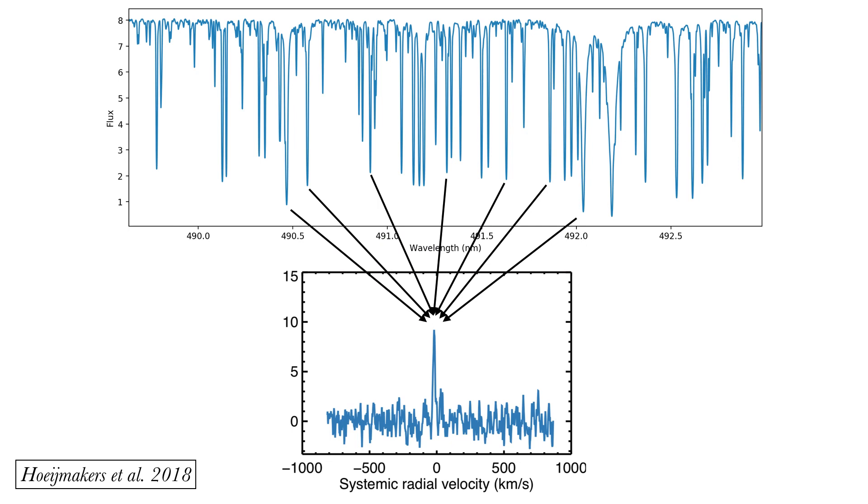To still be able to detect faint spectral lines in the planet's atmosphere, we make use of the cross-correlation technique. This technique uses the fact that we know precisely at what wavelength certain lines are formed. By selecting and averaging sufficient spectral lines, we are able to average out the photon noise to yield a measurement of some average spectral line.